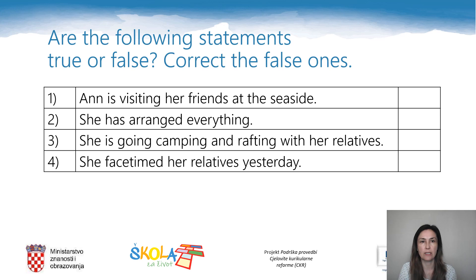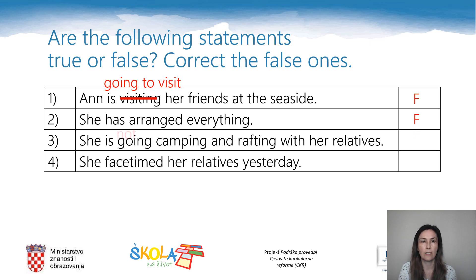Now it's time to do the task: are the following statements true or false? Correct the false ones. The first sentence, 'Anne is visiting her friends at the seaside', is false — if we say 'Anne is visiting', it means she has arranged everything with her friends, which is not the case. We should say 'Anne is going to visit', because these are just her plans. The next sentence, 'she has arranged everything', is also false, because she has not arranged everything. The next sentence, 'she is going camping and rafting with her relatives', is also false — she is going camping and rafting with her friends. And the last sentence, 'she FaceTimed her relatives yesterday', is true.